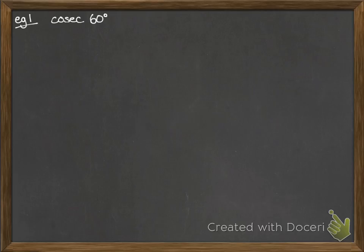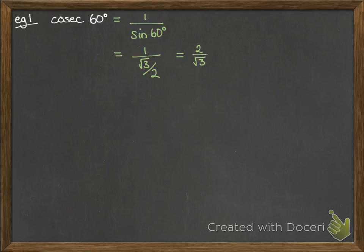Let's have a look at an example. We want to find cosec of 60 degrees. That is 1 over sin of 60 degrees. That's one of our special ones — it's 1 over root 3 over 2. If you're doing 1 divided by a fraction, that's just the reciprocal of the fraction, so it's 2 over root 3.